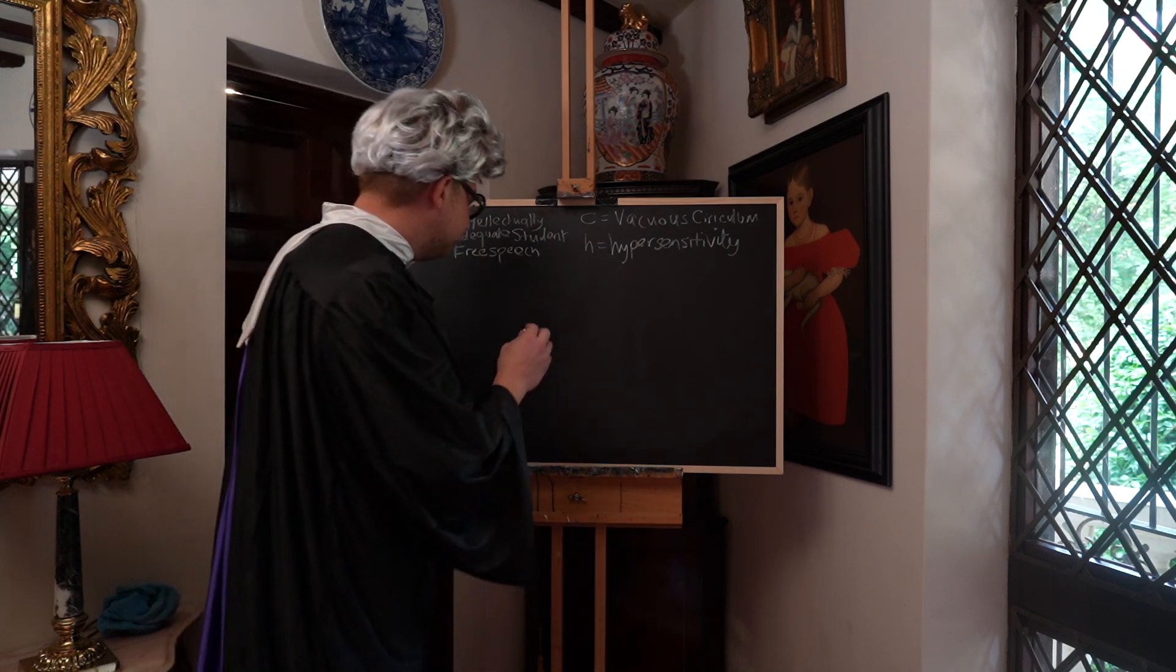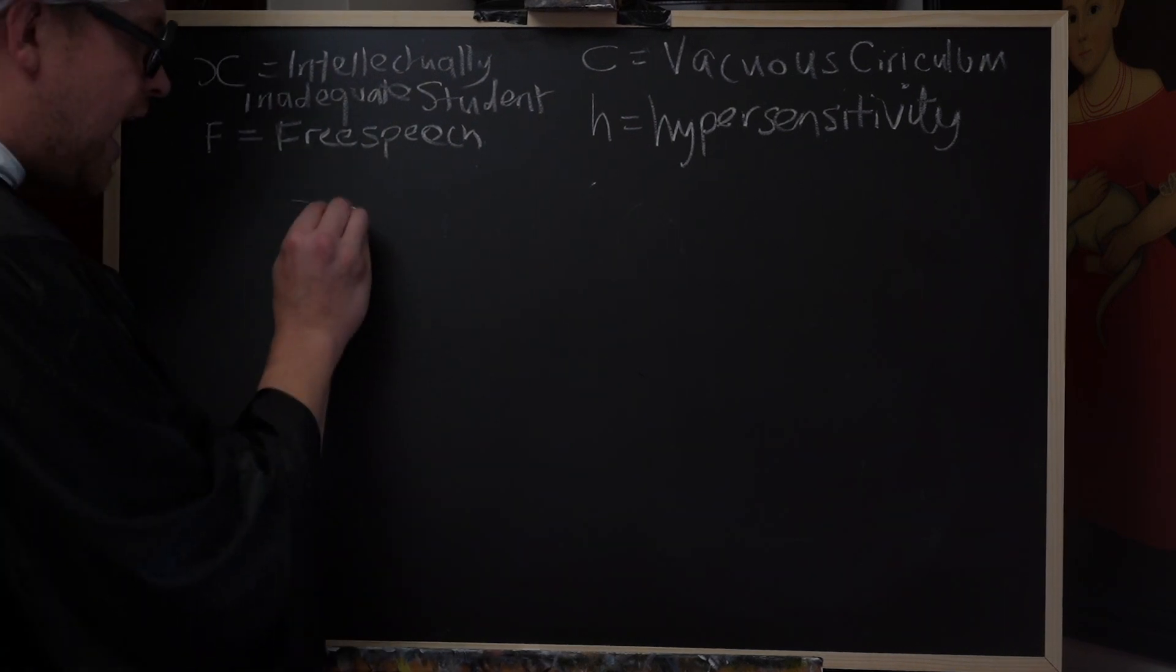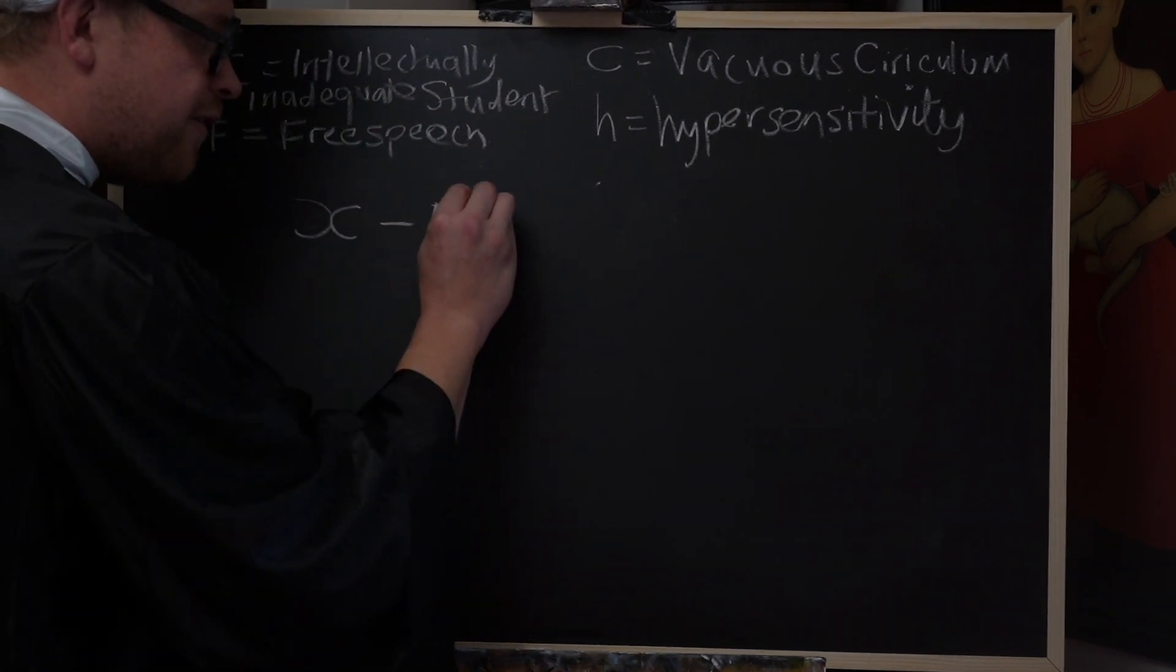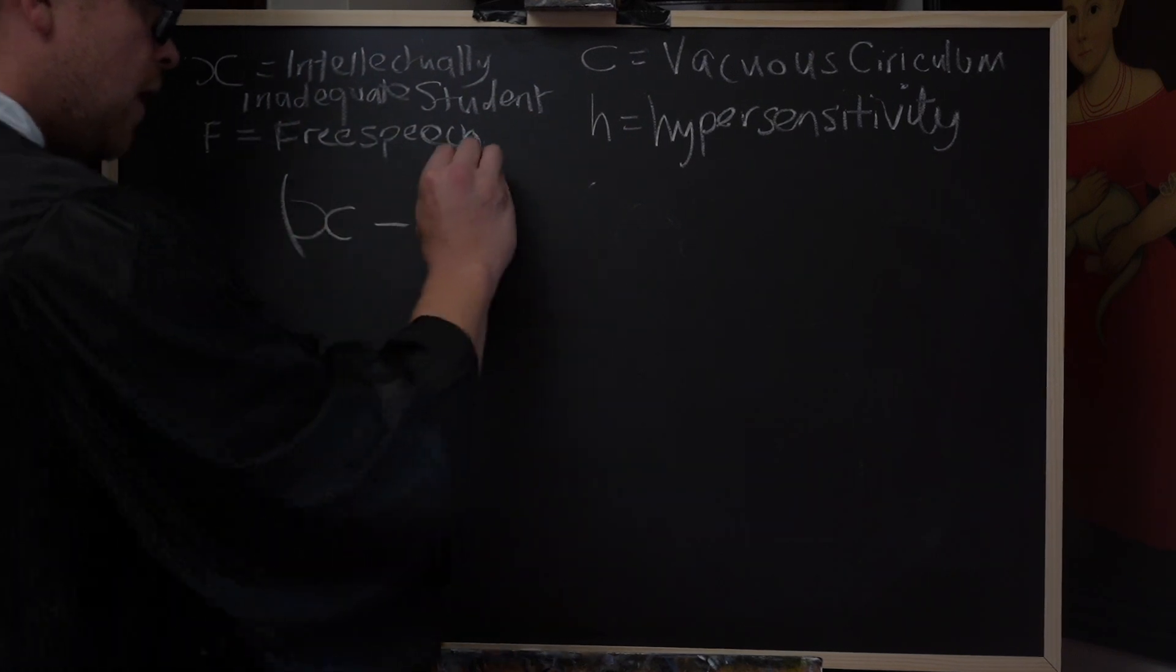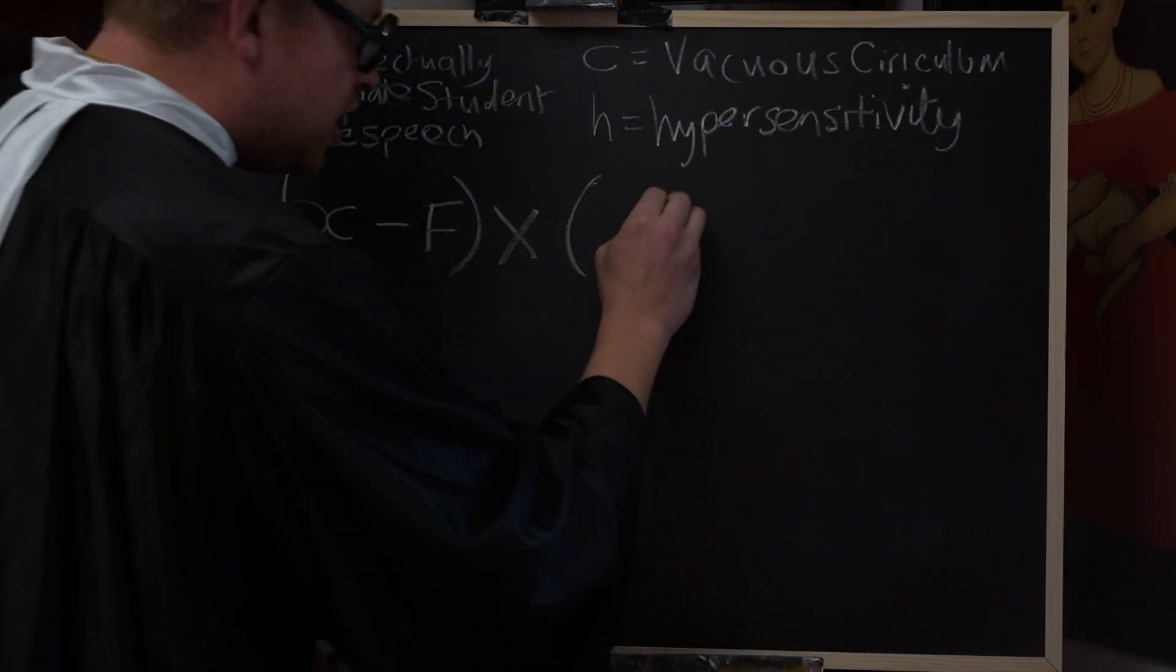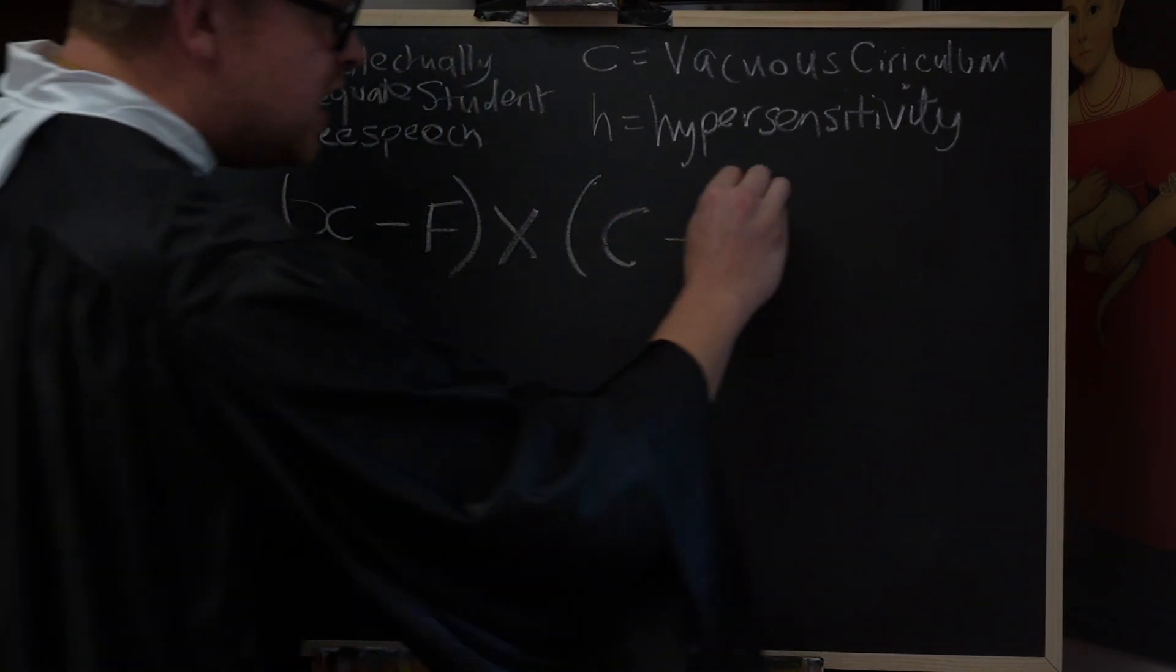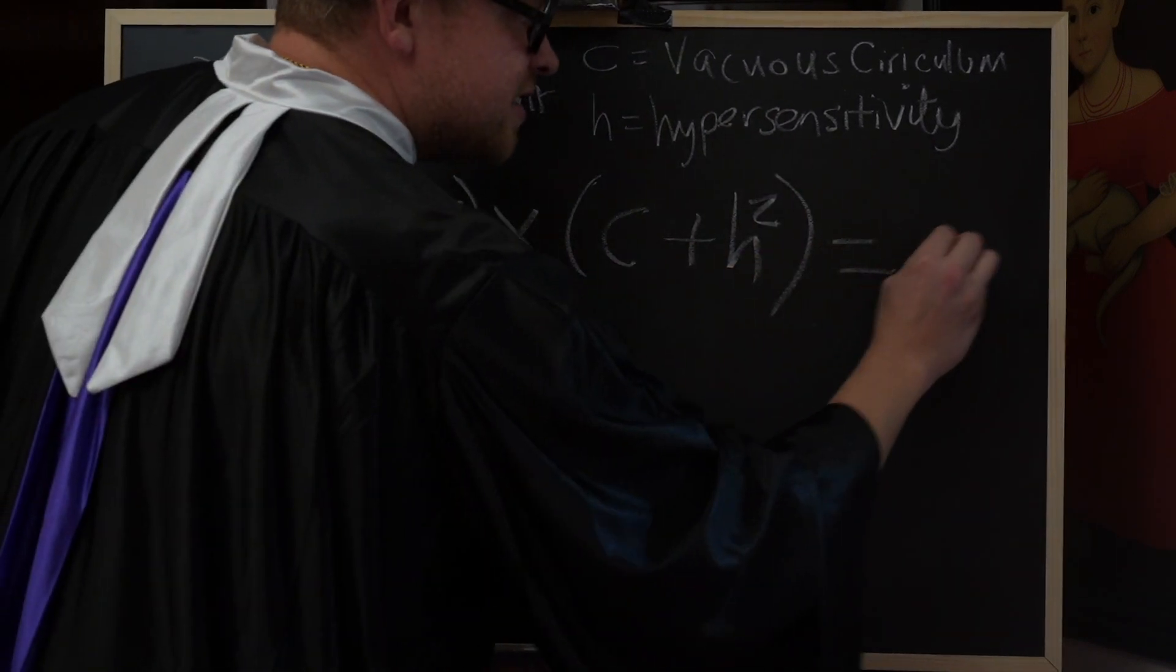Let me explain. If we take the intellectually inadequate student from our original formula, X, then we minus F, free speech, and then we multiply this by C, vacuous curriculum, plus H, hypersensitivity squared, then we get S, safe spaces.